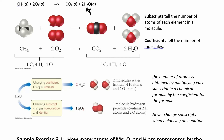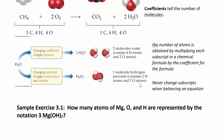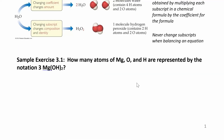When you're balancing, you're only allowed to change the coefficients. I can put a two in front to balance, but I can't add a subscript. For example, if I wanted to balance the number of oxygens, I can put a two in front of water, but I can't put a two after the oxygen — because that would turn water into hydrogen peroxide, which is a totally different compound. You can only add coefficients; if you change the subscript, you have changed the compound.